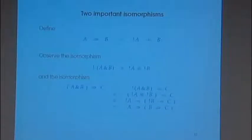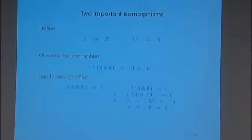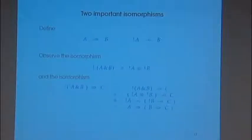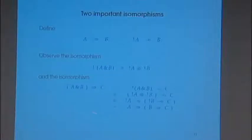Whenever we add a connective, we are looking for good, nice isomorphisms. We had already two of them, and now we have two more. These are very, very important — they are really the central idea of linear logic. Everything, in a way, is here in this slide. This is where one realizes that the distinction between opponent and player is really important.